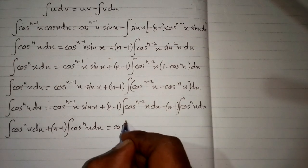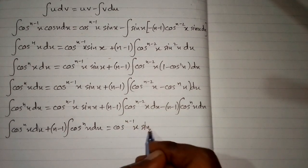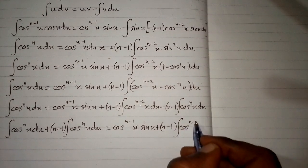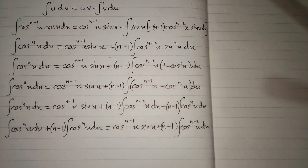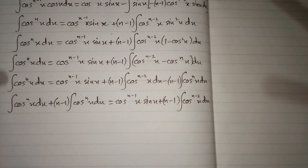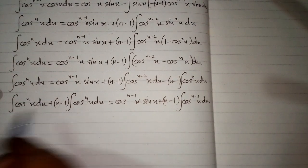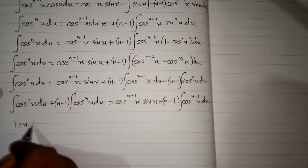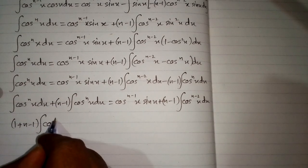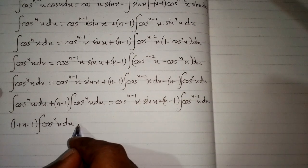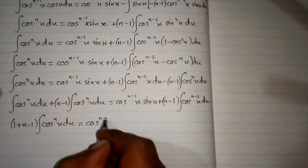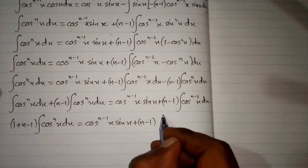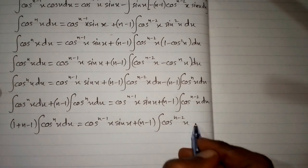This equals cosine raised to the power n minus 1 times sine x, plus n minus 1 times the integral of cosine raised to the power n minus 2 dx. Taking the integral common on the left side, we have 1 plus n minus 1 times the integral of cosine raised to the power n, which equals cosine raised to the power n minus 1 times sine x, plus n minus 1 times the integral of cosine raised to the power n minus 2 dx.